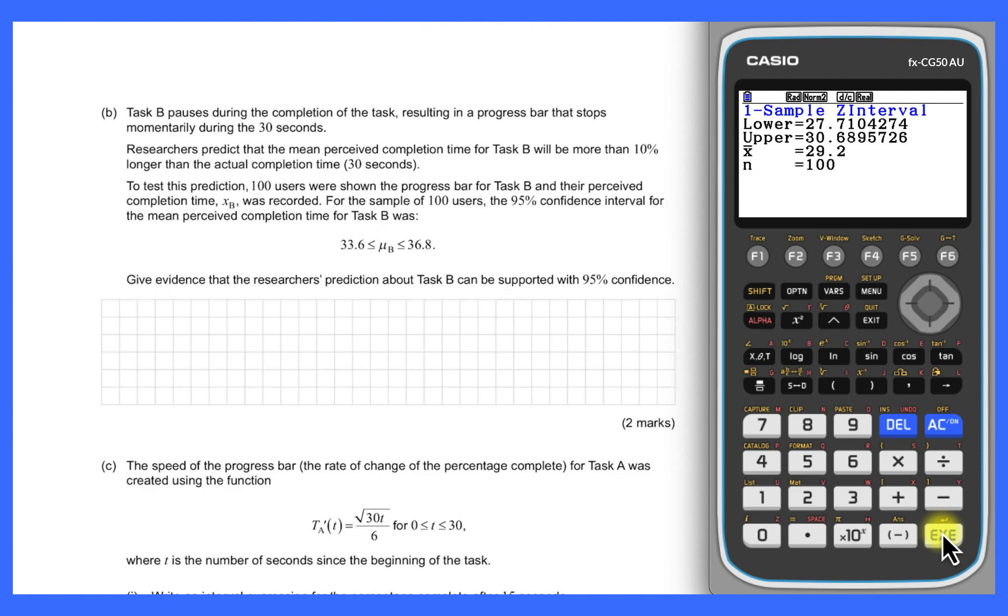Now we look at a second task bar. This one pauses momentarily during the 30-second period. The prediction here is that this will be perceived to be more than 10% longer than the actual completion time. This time we're given a confidence interval and we're asked to give some evidence about that prediction of feeling slower. First of all, we need to think about that 10% idea. The prediction of the perceived completion time being more than 10% larger equates to a mu value of 10% more than 30, which is 33. Then the question is, how does 33 compare to that confidence interval? That interval lies wholly above 33, so that means we can conclude that the perception was that it was more than 10% slower.